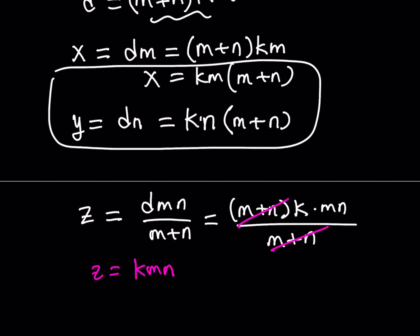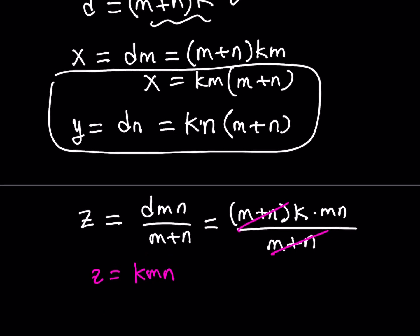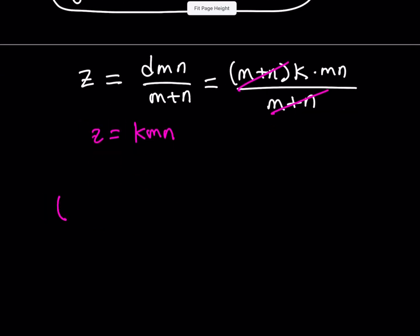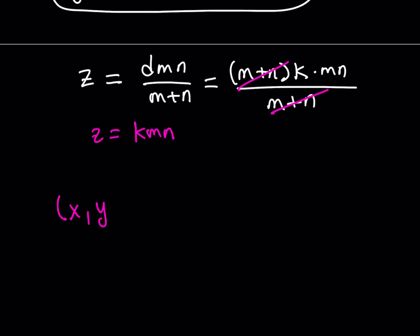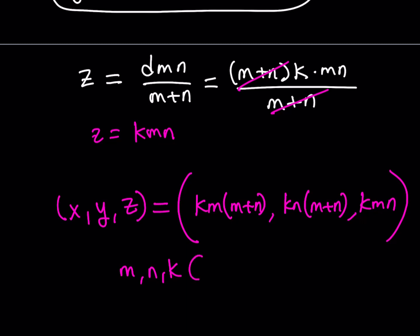So, now if you put it all together, basically we're going to be getting our solutions as an ordered triple. Let's go ahead and write it down as an ordered triple. So, xyz is going to equal km times m plus n, comma kn times m plus n, comma kmn. And m and n and k are all positive integers.